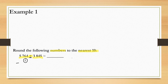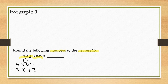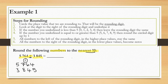So 5764, and then 3845. We will then round each of these numbers to the nearest 10 as we were told, and we will be using our steps for rounding. Let's start with the first number, 5764. Our first step is to circle the place value that we are rounding to, and since we are rounding, we will be using our approximately equal to sign.